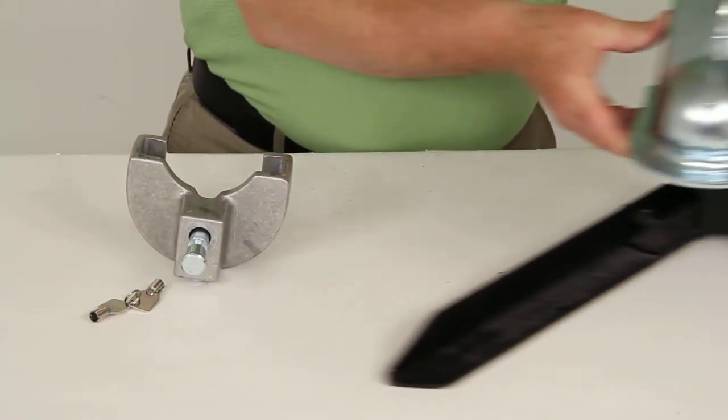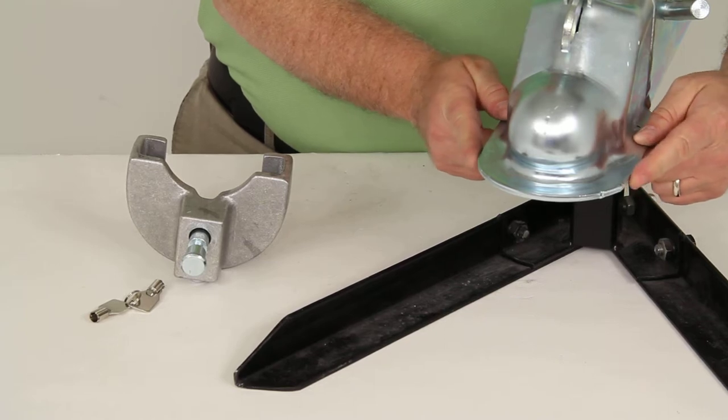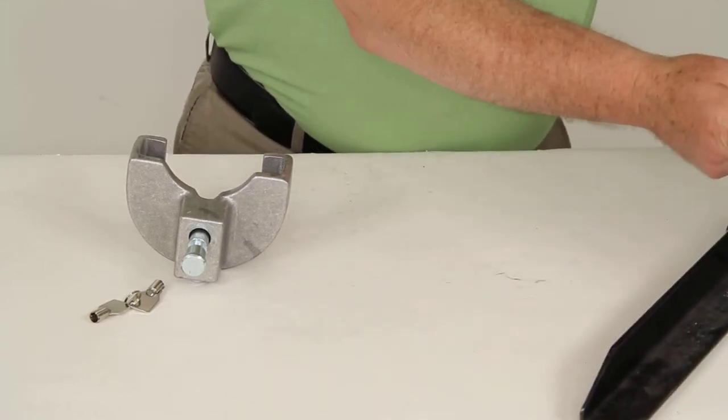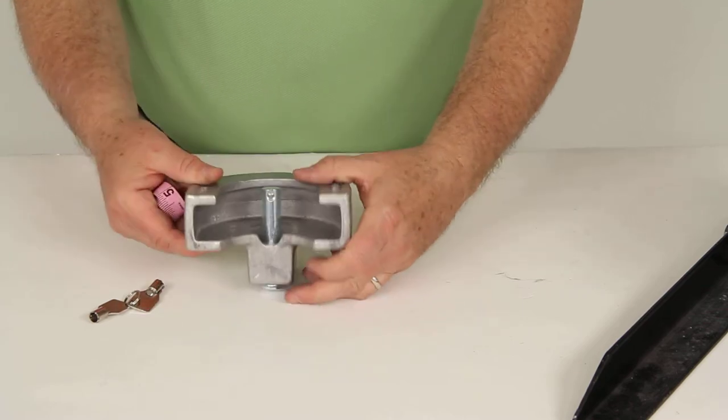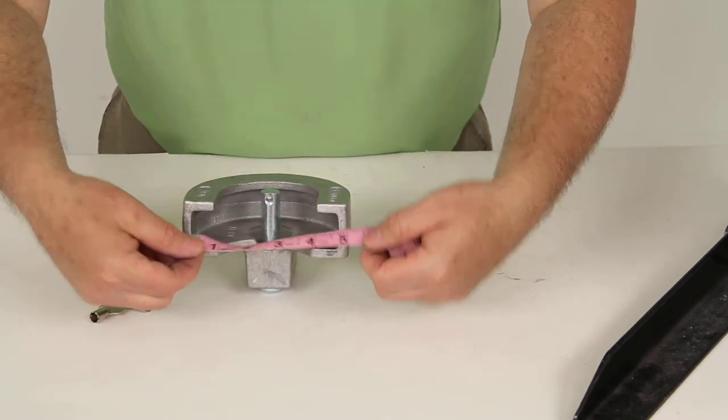So on this coupler like I have here, the width of it cannot be any more than 4 1/2 inches for this lock to slide on. There's the 4 1/2 inches that you want it to fit onto.